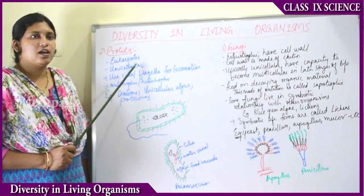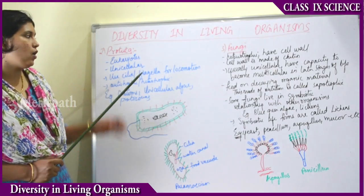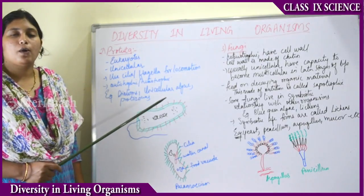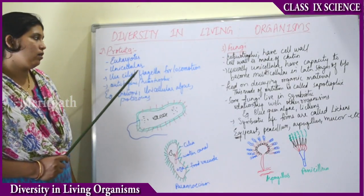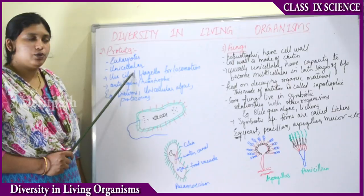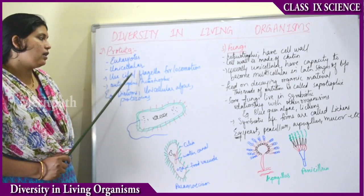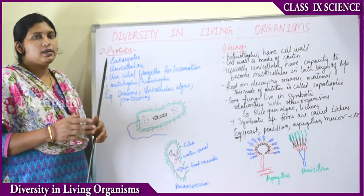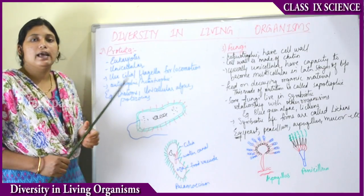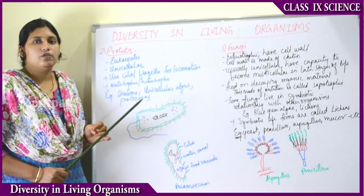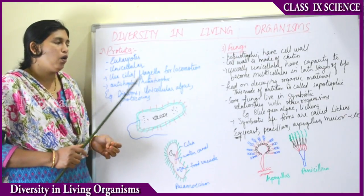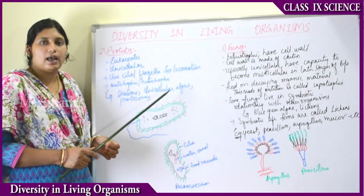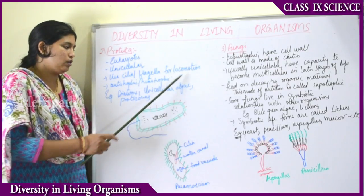Next is Protista. Protista organisms are eukaryotes. They have a proper cell-bound cell membrane and they are unicellular. They use cilia or flagella for locomotion. The body has small hairline structures all over it known as cilia or flagella, and these help in the movement of the organism, which is known as locomotion.